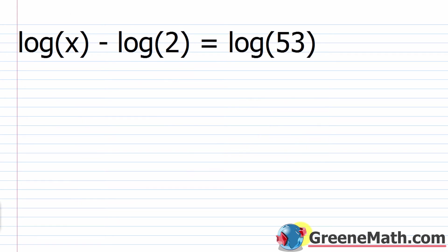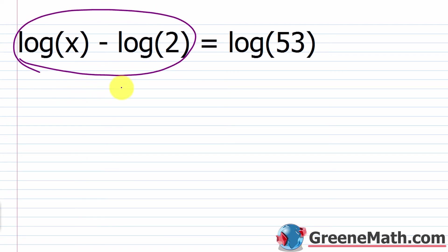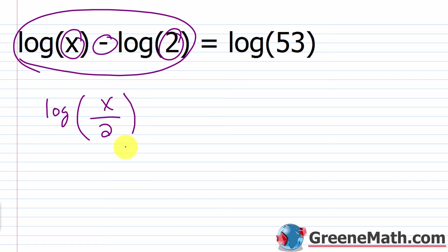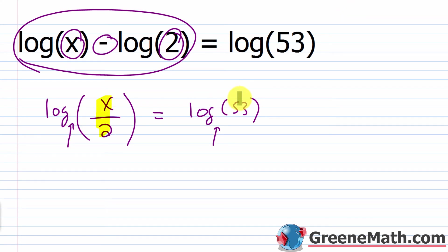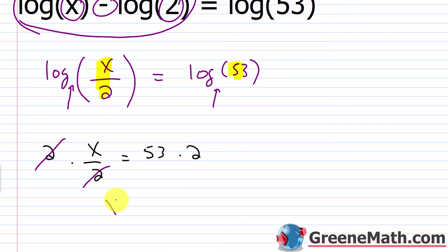Let's take a look at one more: log of x minus log of 2 equals log of 53. Again, I want to condense the left side — I have subtraction involved, so I write this as log of x over 2, and this is equal to log of 53. Since I have the same base on both sides, I can set the arguments equal to each other: x over 2 is equal to 53. I multiply both sides by 2, and this cancels, so x is equal to 106.